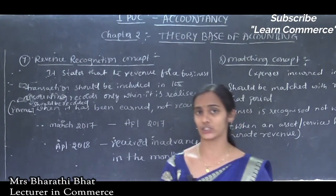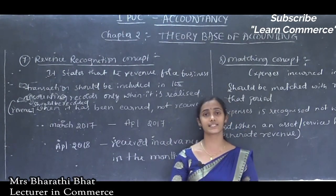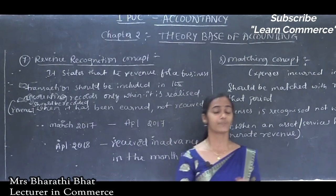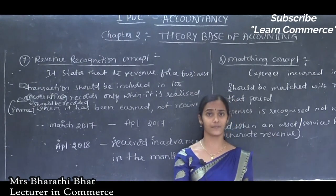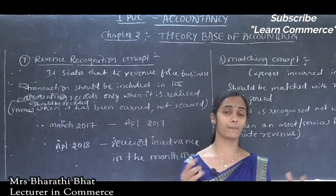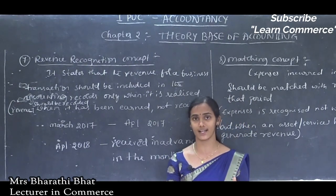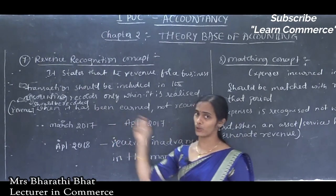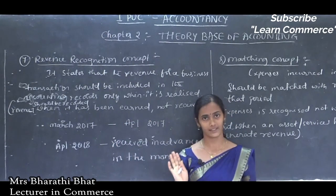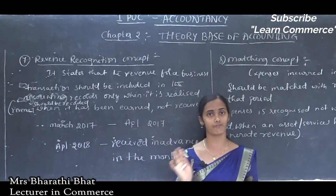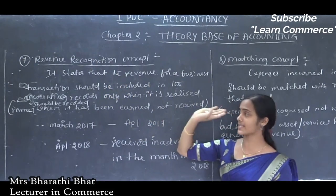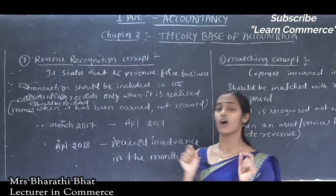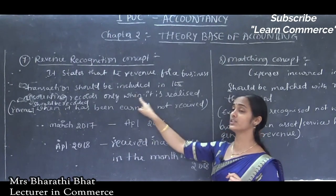We know that cash transactions and credit transactions are existing business activities. Cash transaction means payment of cash at the time of sale or purchase of goods. Credit transaction means giving a time period to repay the amount. Here, revenue — we should record each and every transaction in the books of account, which is a very important and essential function of accounting.